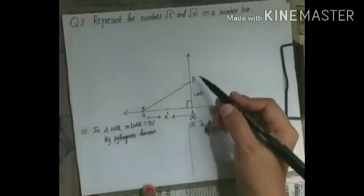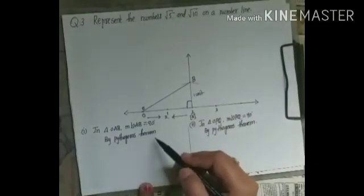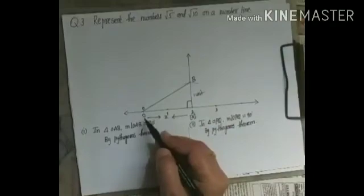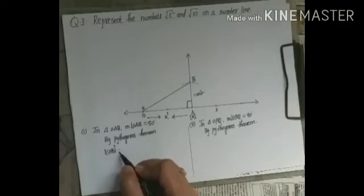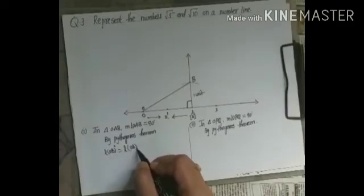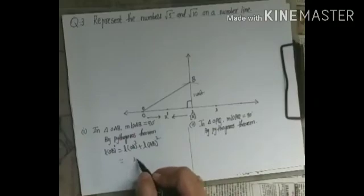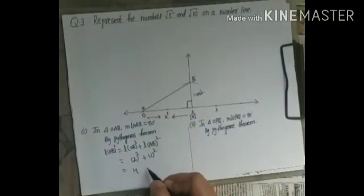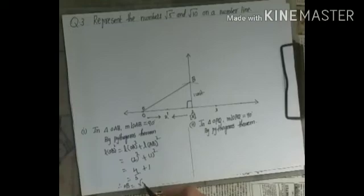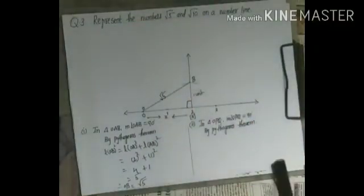We know sides 1 and 2 but not the hypotenuse, so we find it using the Pythagorean theorem: OB² = OA² + AB². OA = 2 units and AB = 1 unit, so OB² = 2² + 1² = 4 + 1 = 5. Therefore OB = √5. So this hypotenuse length is √5.